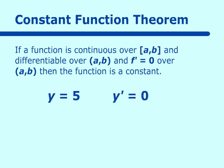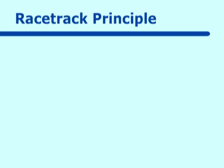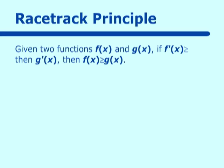Our second theorem is really called the race track principle, and it reads: given two functions f of x and g of x, if f prime of x is greater than or equal to g prime of x, then f of x is greater than g of x. We can give an example of that.